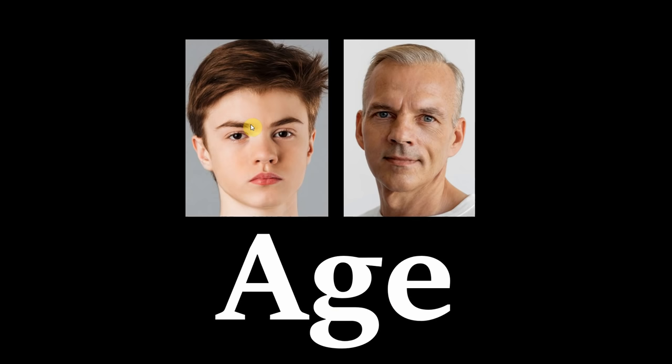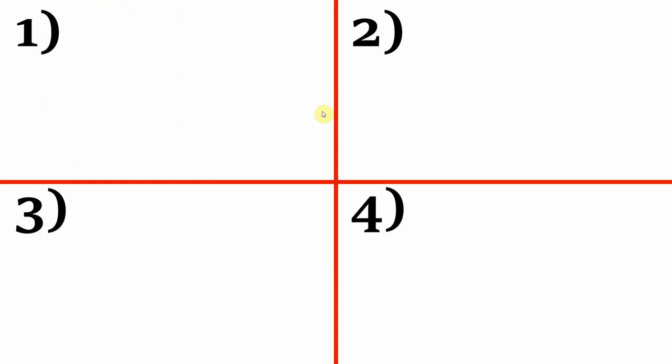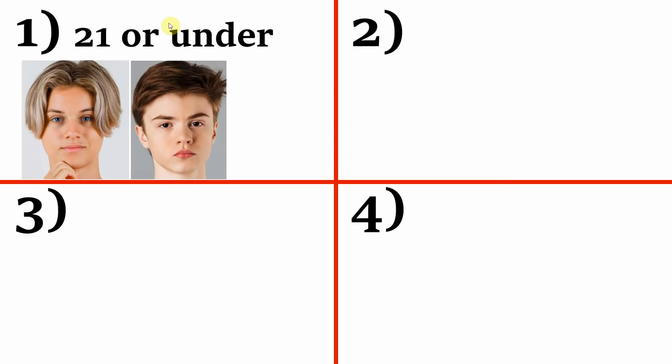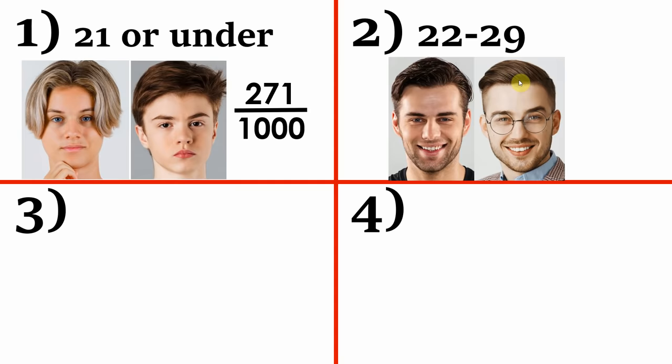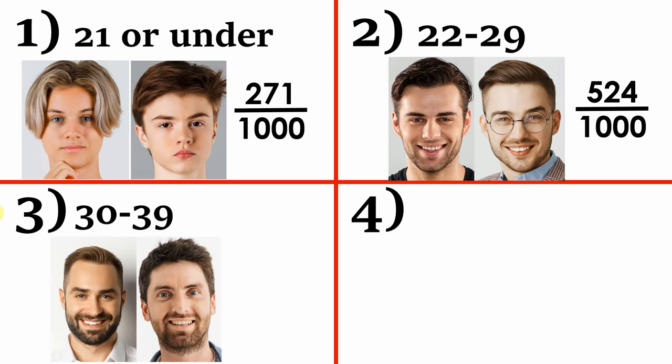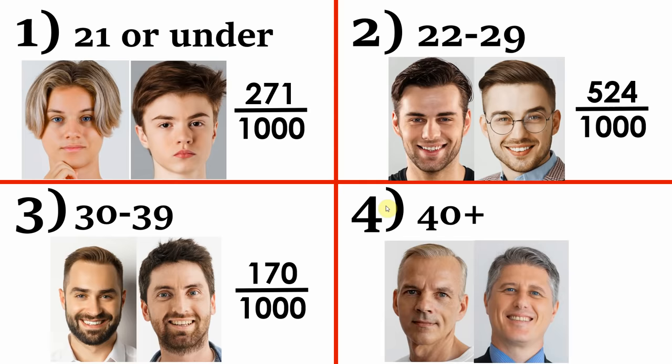So, that's the results for body types. Now let's take a closer look at age. Again, there were 4 categories. 1. 21 or below, for which there were 271 guys. 2. 22 to 29, which was the biggest age bracket at 524 men. 3. 30 to 39, there were 170 of these. 4. 40 plus, just 35 guys were in this age bracket.